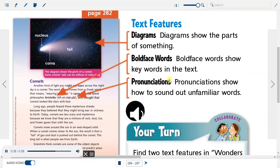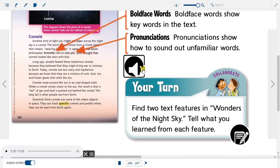Text features: Diagrams show the parts of something. Boldface words show keywords in the text. Pronunciations show how to sound out unfamiliar words. Your turn. Find two text features in Wonders of the Night Sky. Tell what you learned from each feature.